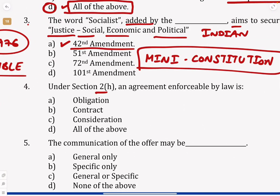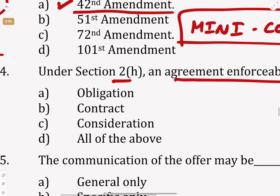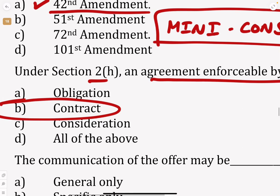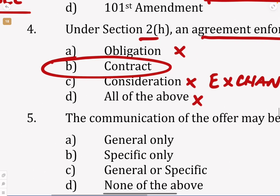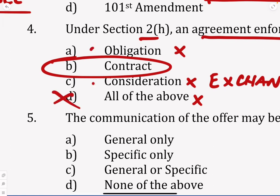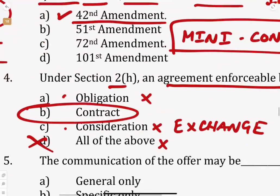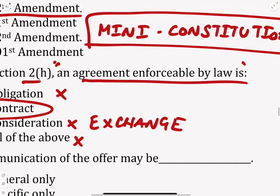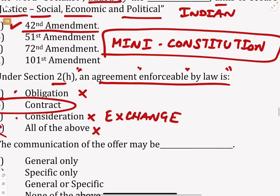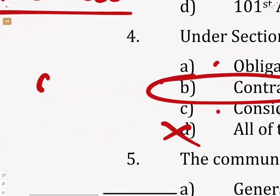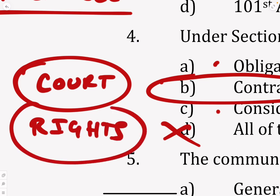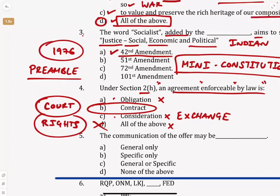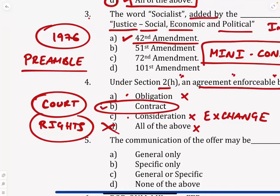Next, under Section 2H, an agreement enforceable by law is Dash. We know this very well — an agreement enforceable by law is a contract. It is not an obligation. It is not consideration; consideration is what we exchange between the parties of a contract. So 'all of the above' is not correct either, because it is not consideration and not obligation. Section 2H of the Indian Contract Act says that an agreement which is enforceable by law — meaning if any party does not fulfill its conditions, you can go to court and fight for your rights — is called a contract. So the answer is B.